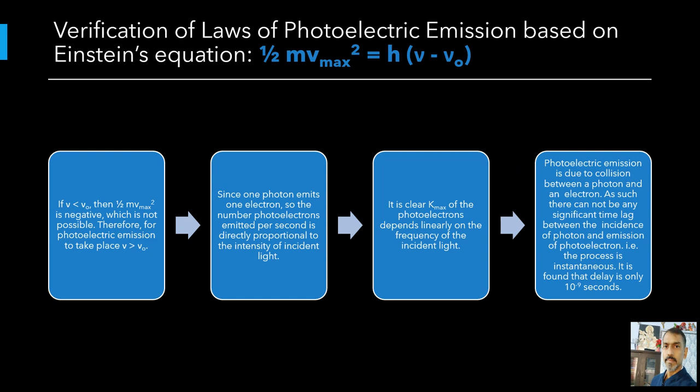Since k max must be non-negative, Einstein's equation implies that photoelectric emission is possible only if h nu is greater than phi nought. Thus, there exists a threshold frequency nu nought for the metal surface, below which no photoelectric emission is possible, no matter how intense the incident radiation may be, or how long it falls on the surface. In other words, frequency of incident radiation should be greater than threshold frequency, where threshold frequency equals phi nought divided by h.